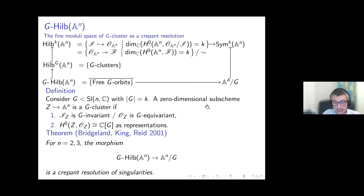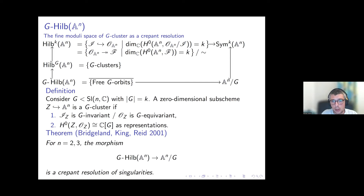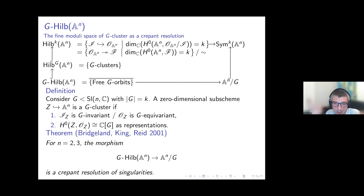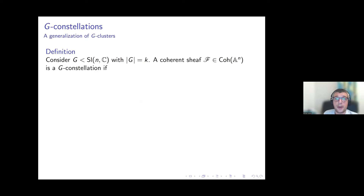This is the sharpest result in the sense that in dimension four, G-Hilb may be singular or the crepant resolution may not exist. In the paper they also proved some derived equivalence between derived categories, but I will focus on the crepant resolution today. The theorem is particularly interesting in dimension three because there crepant resolutions, which are minimal in some sense, are not unique.